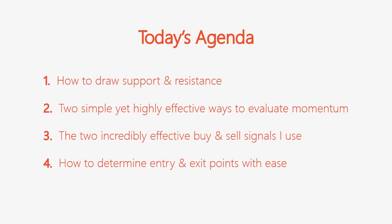So what are we covering today? First, I'm going to walk you through exactly how I draw support and resistance levels. Second, I'm going to talk about two highly effective ways to evaluate momentum — this goes back to identifying trends — and I'll show you the three different trends I look for and how to evaluate the momentum of each one so you'll know if you should be buying or selling. Third, I'll talk about two effective buy and sell signals that I use. And fourth, I'll show you exactly how I enter the market and how I exit. Once you understand this, you can use it in any scenario and you'll never find yourself guessing where to get in and out.